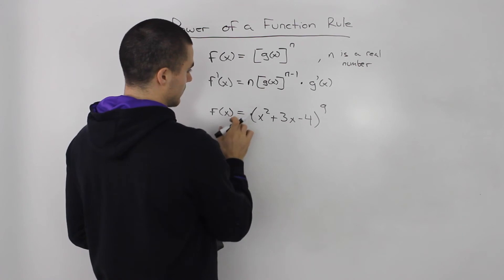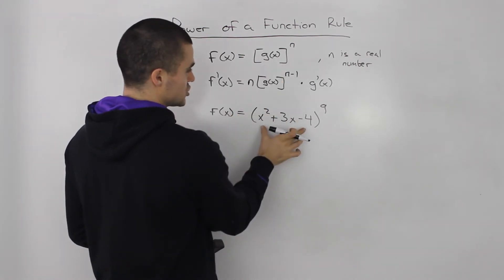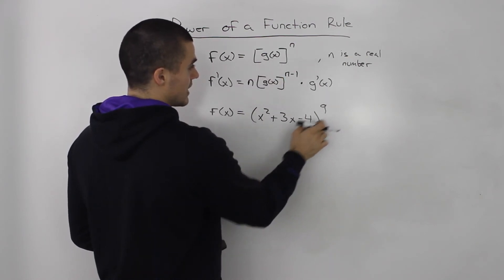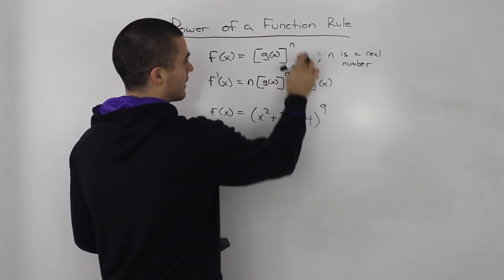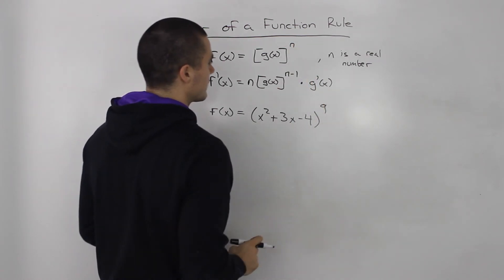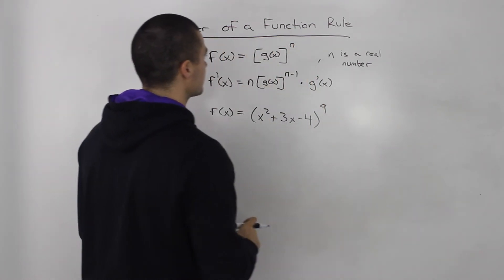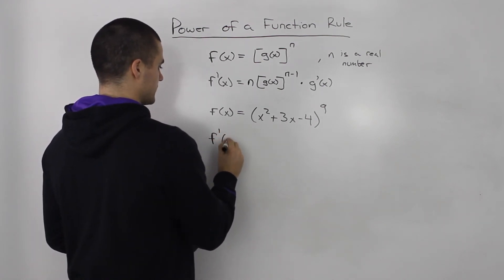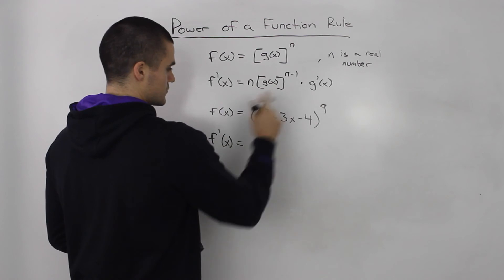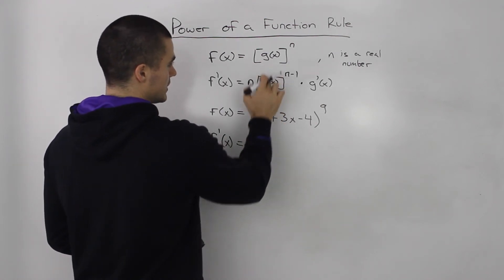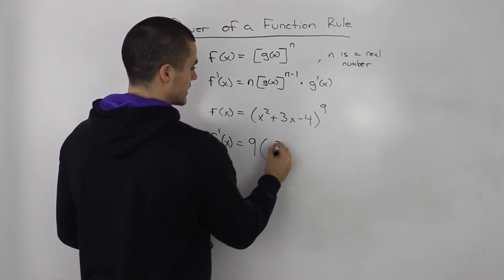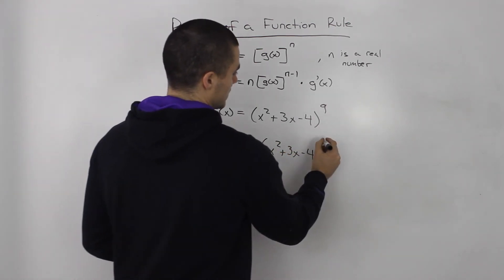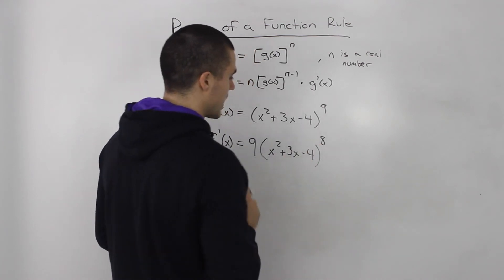Notice how f(x) is in terms of a function g(x). So this x² + 3x - 4 represents this g(x), and then it's to the power of 9. So that 9 is represented by n in the general expression. So the derivative of it is we just bring the 9 down, keep the function the same inside that g(x). So that will just be x² + 3x - 4 minus 1 from the exponent, so we'll have 8 here.